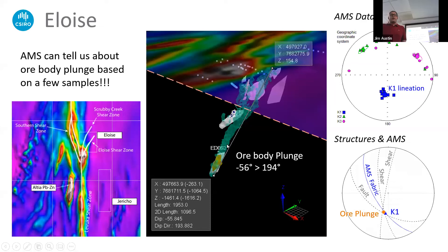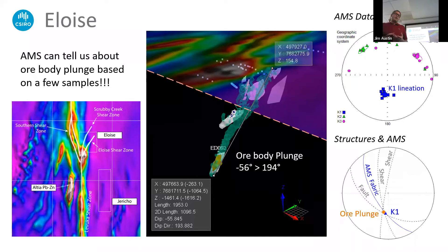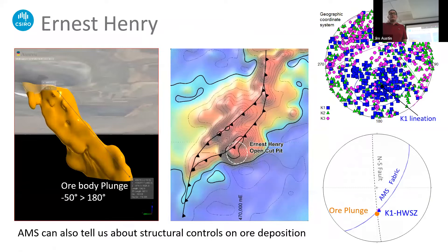One really powerful thing AMS can do is tell us about ore body plunge. Here we've got some samples from Eloise — parts of it are quite magnetite-rich and parts quite pyrrhotite-rich. With only five or six samples, the K1 — the main lineation direction — lines up exactly with the plunge of this ore system. If you go and drill a prospect that looks good and it's one of these IOCG-ISCG type prospects, send us some samples and figure out what the AMS is doing — because that's going to help you drill the next hole and hit it again. At Ernest Henry with a lot more data, the K1 lineation is still exactly the same as the ore body plunge.